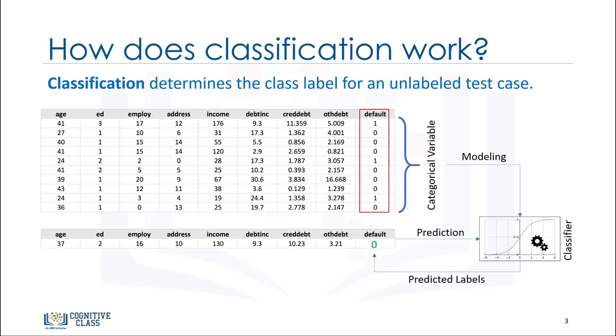This is how a classifier predicts an unlabeled test case. Notice that this specific example was about a binary classifier with two values. We can also build classifier models for both binary classification and multi-class classification.